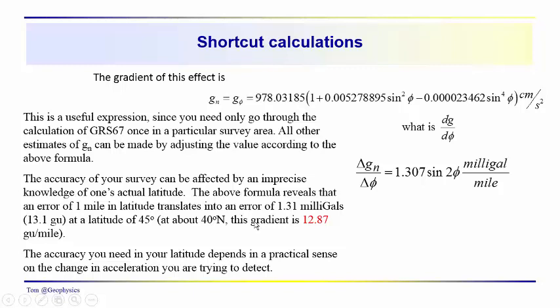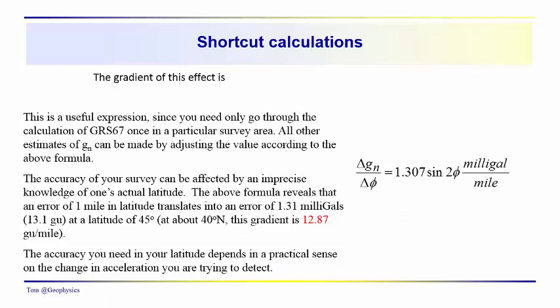At 40 degrees north latitude, 12.87, 1.29 milligals, 12.87 gravity units. So, it's important to, even in a fairly local area, if your survey extends more than a few hundred feet north or south, then you've got to take into consideration this normal gravity, because it's going to change what the expected value of the acceleration due to gravity is in that area.